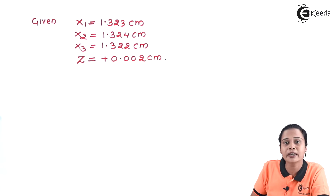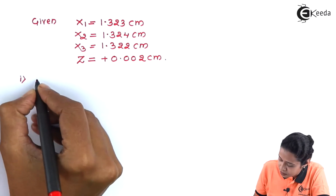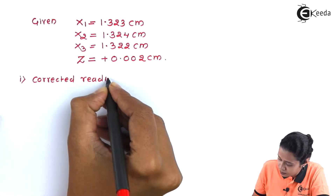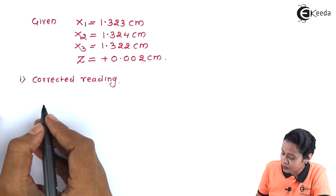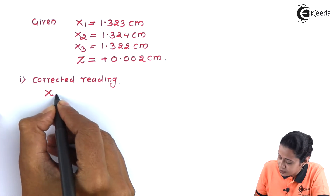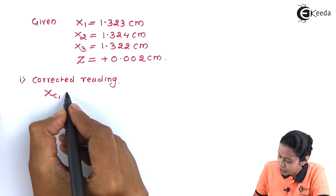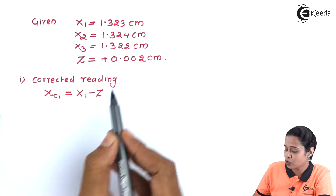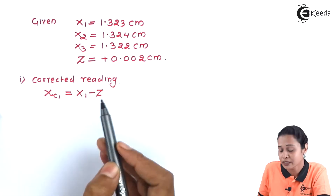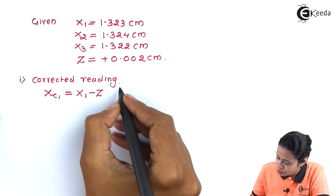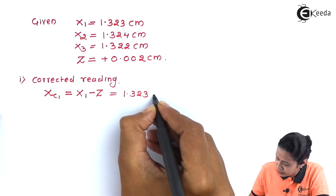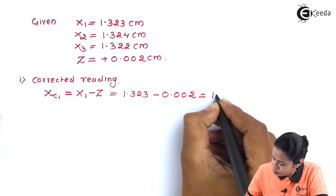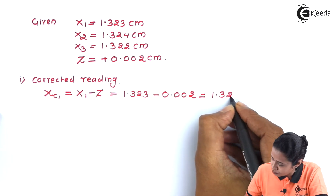The first step involved is finding the corrected reading. Corrected reading Xc1 = X1 minus Z. Why minus Z? Because the zero error is positive, that is why the corrected reading will be negative — so we take minus Z. So, 1.323 minus 0.002 gives 1.321 cm.